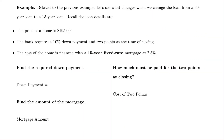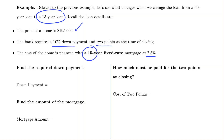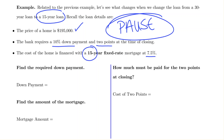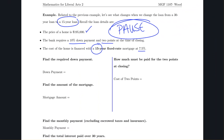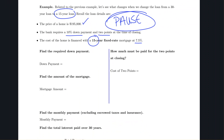Our next example is very similar to the previous one, except instead of a 30-year loan we're now looking at a 15-year loan. All other details are the same: price is $195,000, 10% down payment, two points, and the interest rate is still 7.5%, but now it's a 15-year fixed rate loan. I'd encourage you to pause and attempt this on your own.